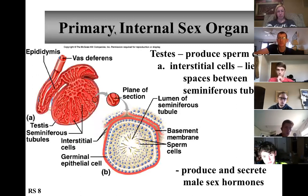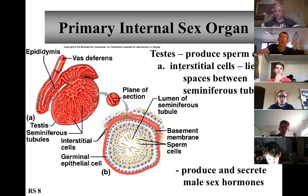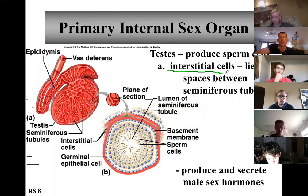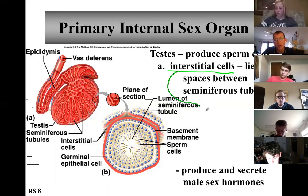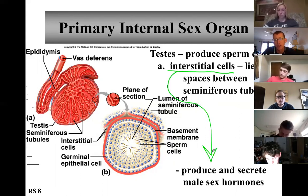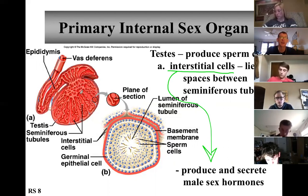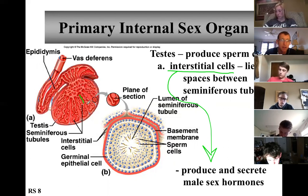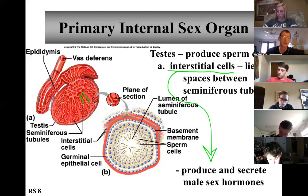Cross-section of the testes — these are kind of cool. The testes produce sperm cells and they also have interstitial cells. Interstitial cells are very important because they make testosterone. There are spaces between the seminiferous tubules where the interstitial cells lie. In here are interstitial cells making testosterone; these tubes are making sperm cells. These tubes twist and twirl all throughout the testes — this is just a cross-section, a two-dimensional picture.